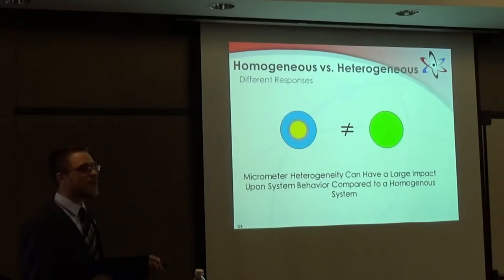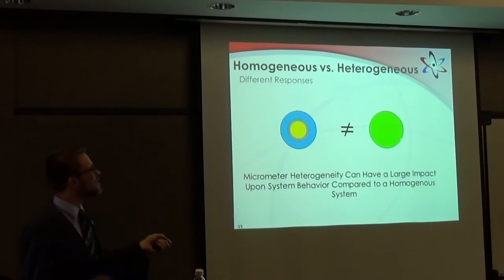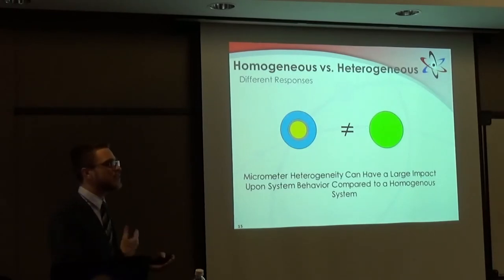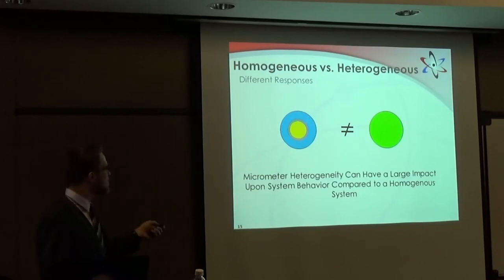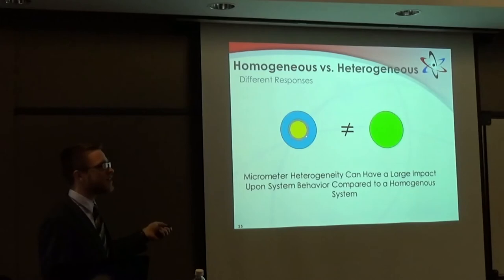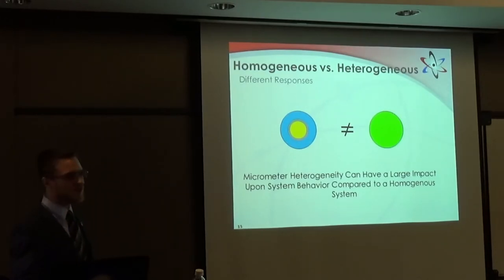I want to study something where there really hasn't been a lot of work done. In a lot of codes, what they do is homogenize: they take this heterogeneous red-and-blue area and create a single area that's just a mixture. I'm going to say that's very wrong — in fact, this heterogeneity, even though it's very small, you can't just mix it together and get the same response. It causes a very different response.